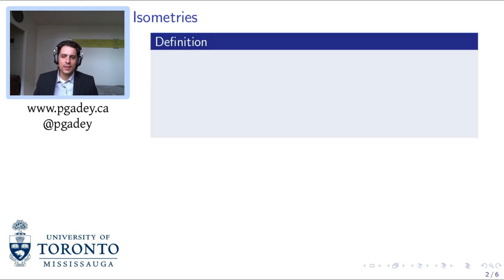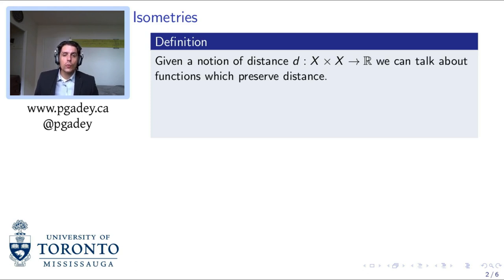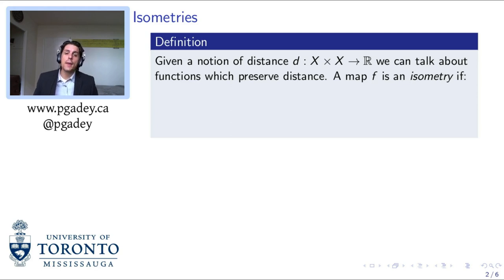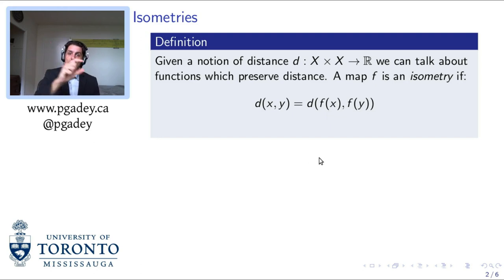Let's have a look at what that looks like. Given a notion of distance on a space, we can take pairs of points in the space and assign some length to them. We'll call that function d for distance. Given such a function, we can talk about functions which preserve that notion of distance. We say that a map is an isometry if that map preserves distances — the distance between x and y is the same as the distance between f of x and f of y. So when we apply our map, the distances remain the same before and after application of the function.